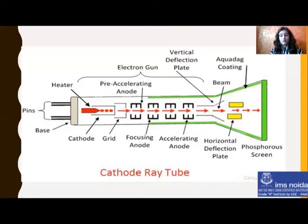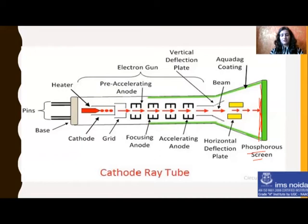Inside the screen area there is a coating of phosphor — a phosphor screen. In old televisions, different types of phosphor were used because these were black and white televisions. Here we are talking about black and white televisions. Phosphor types such as P1, P4, P31, and P7 were used for black and white television — meaning only two colors were produced: black or white.